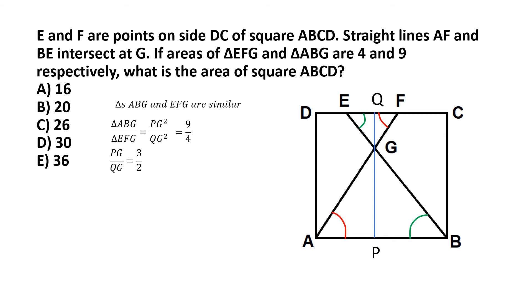So PG by QG is equal to 3 by 2. So what I'll do here now, for simplicity, I let PG equal to 3a and QG equal to 2a, where a is some common constant of proportionality. So we have PG by QG equal to 3 by 2, I'm letting PG equal to 3a and QG equal to 2a.